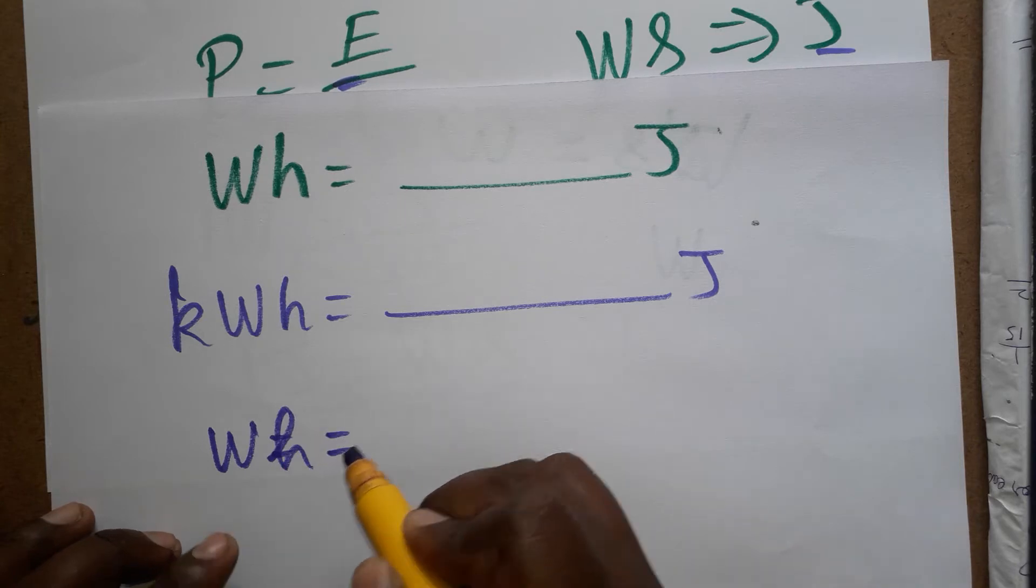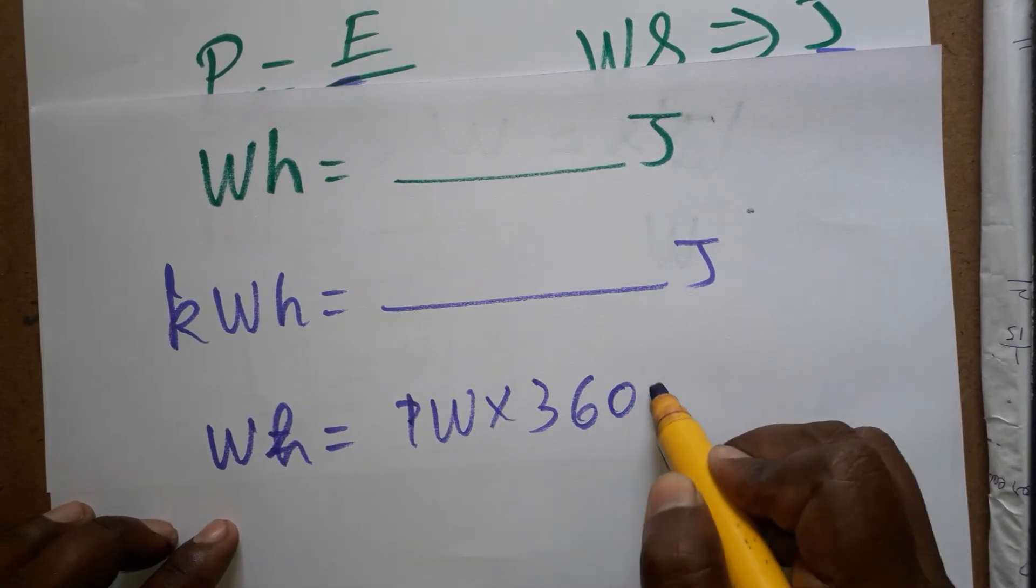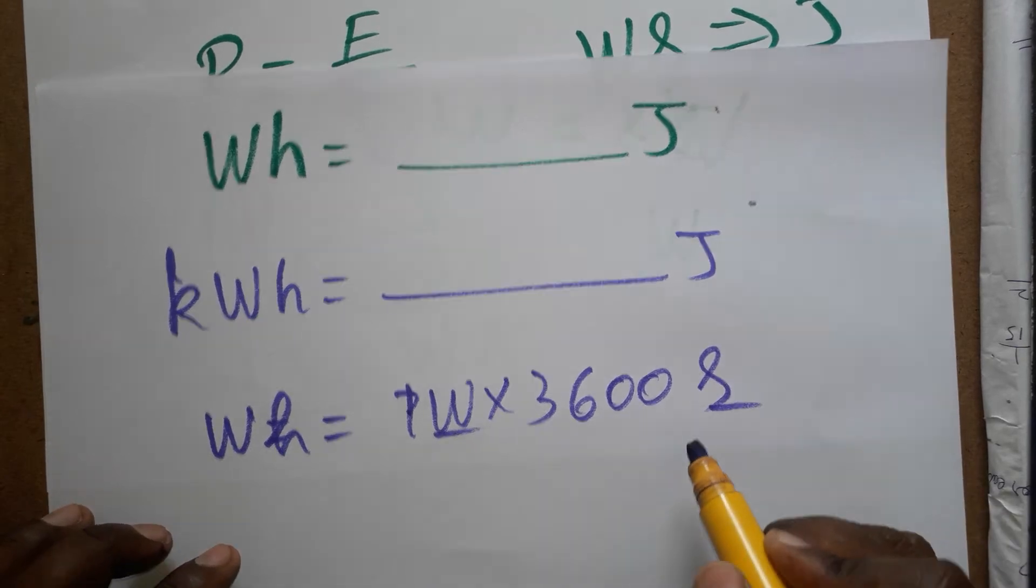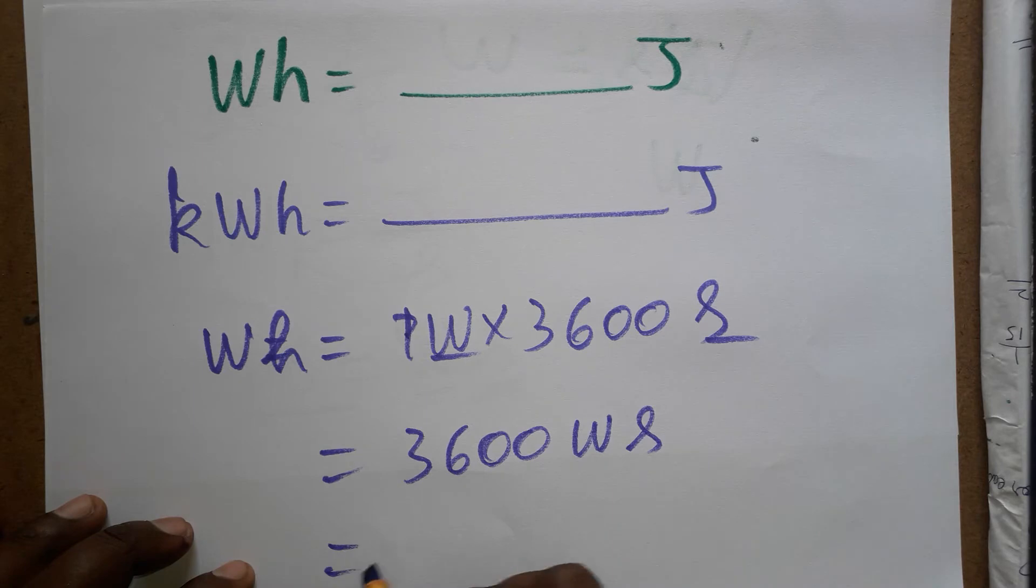So watt hour is one watt into 3600 seconds. So watt second finally we got, so 3600 watt second which is going to take as joule, so 3600 joules. So we will get 3600 joules.